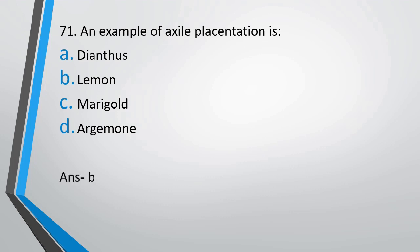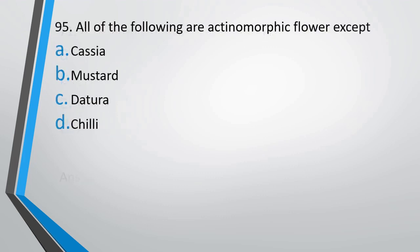Question number 95. All of the following are actinomorphic flowers except: (A) Cassia, (B) Mustard, (C) Datura, or (D) Chili. Which of the following is not an actinomorphic flower? The correct answer is option A — Cassia.